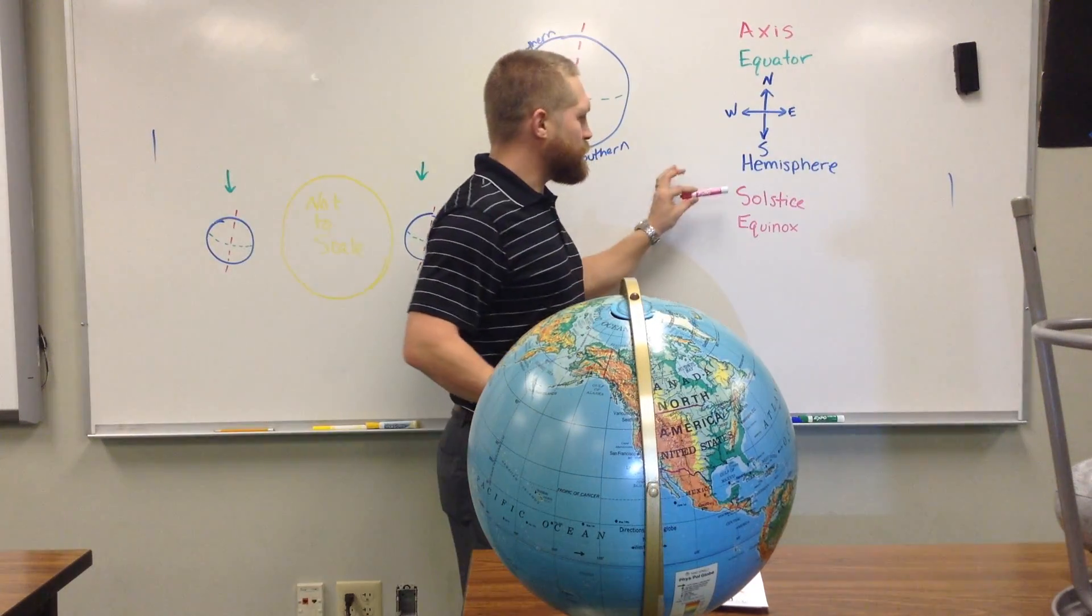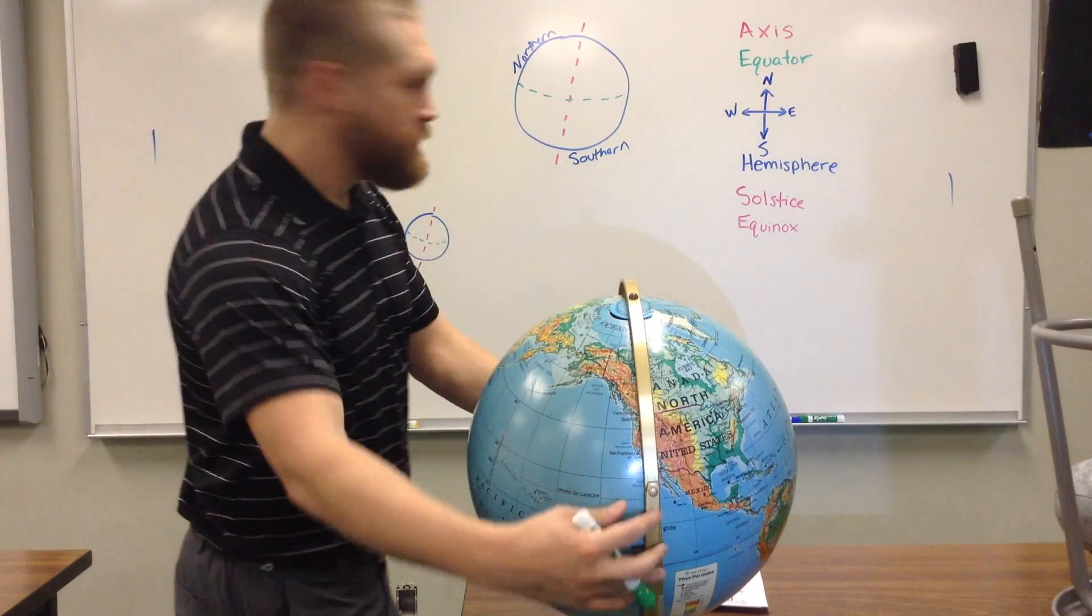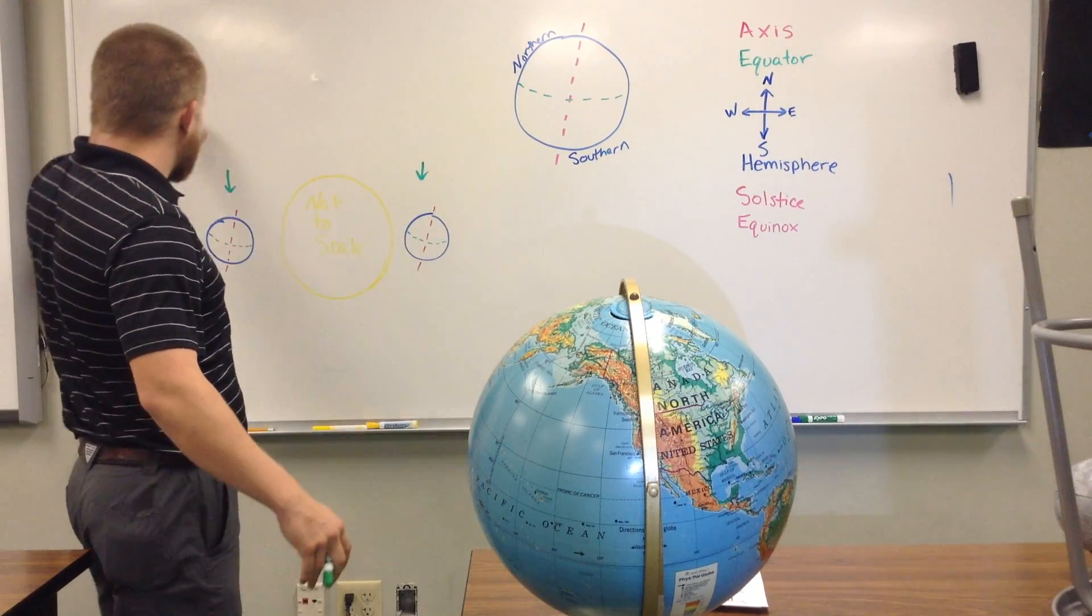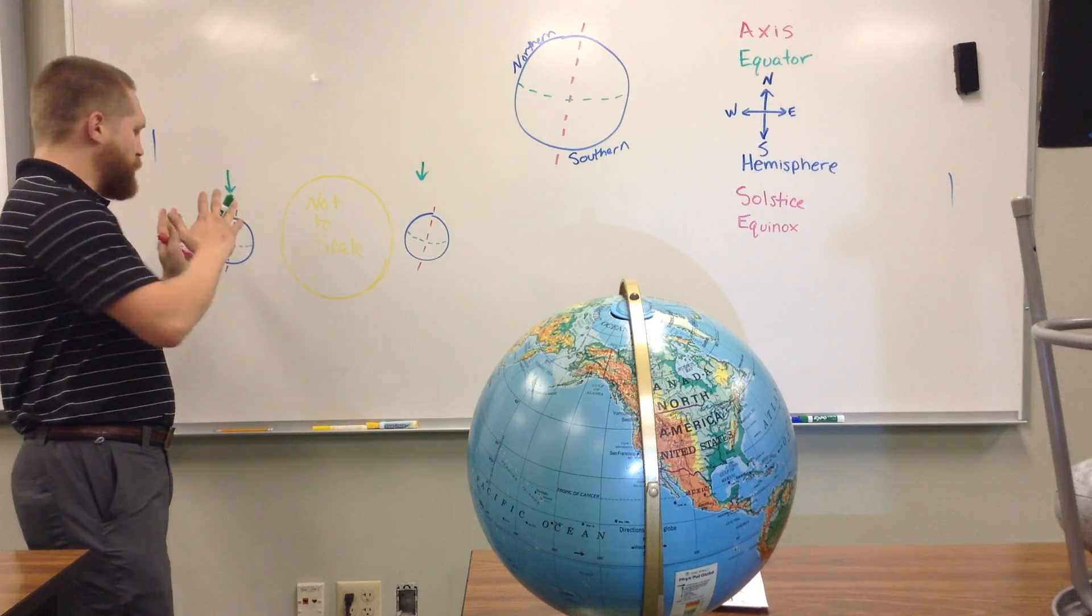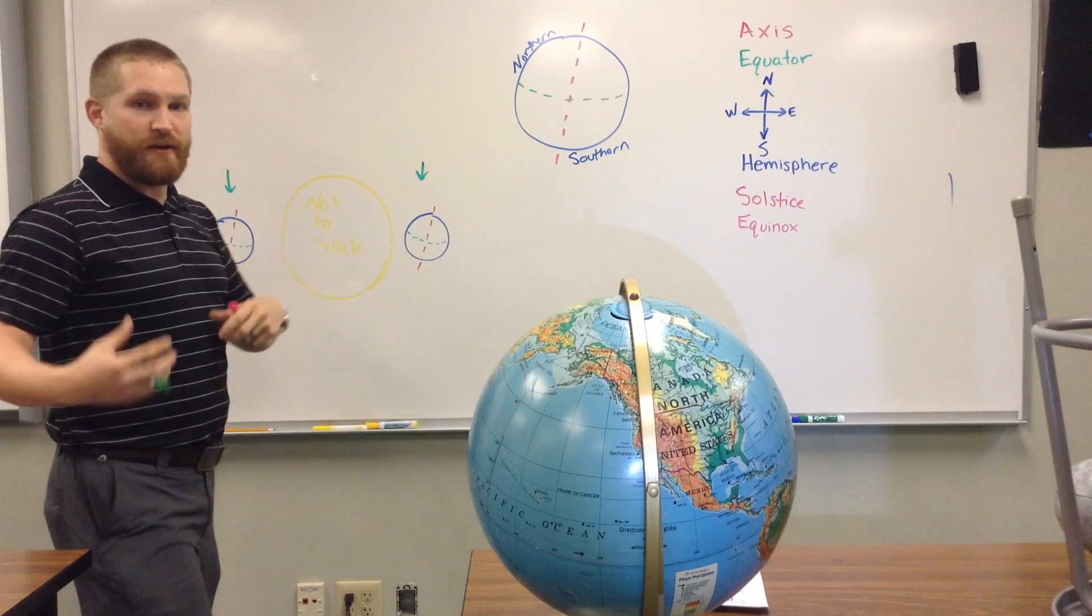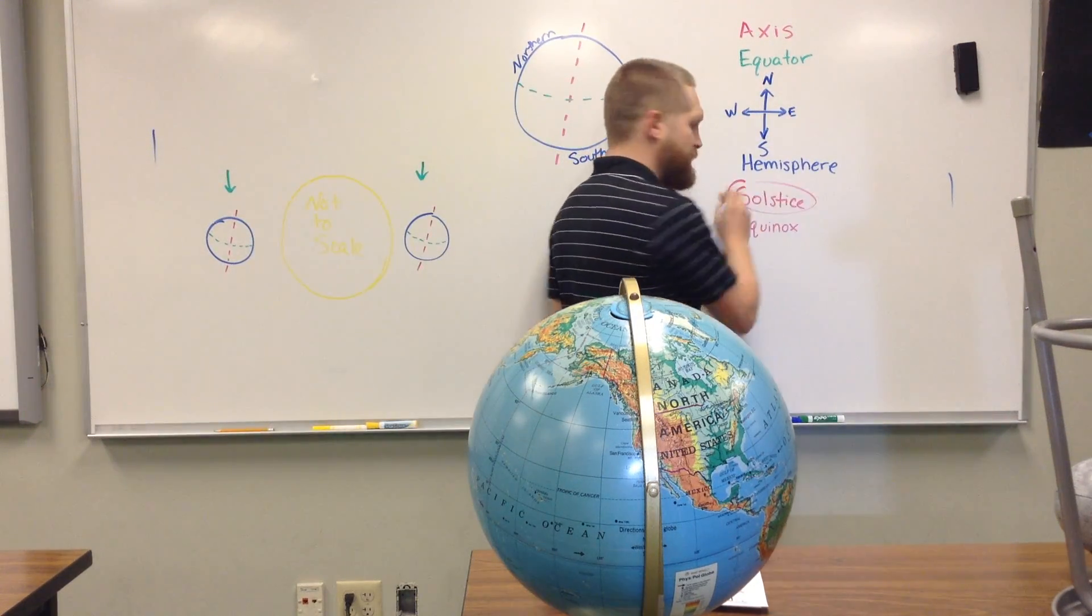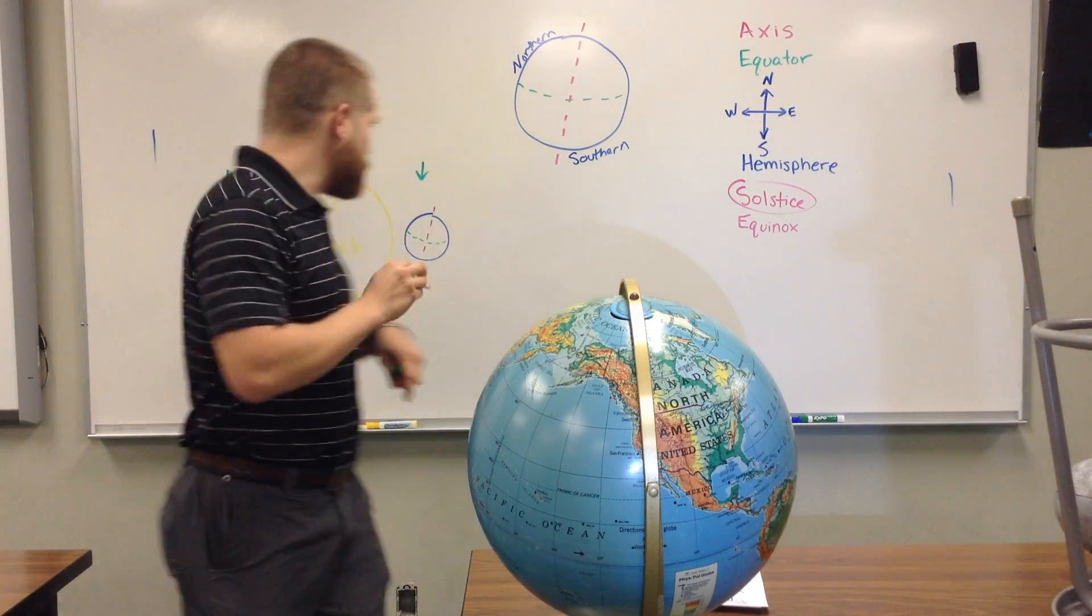So, the other two words that are really important are solstice and equinox. So, right now, when the earth is at its farthest point and pointed at the sun or away from the sun, the greatest, that's our solstice. So, both of the things you just saw are solstices.